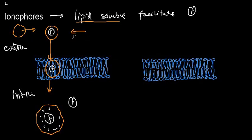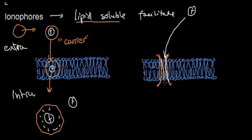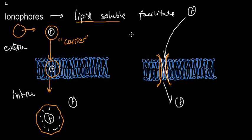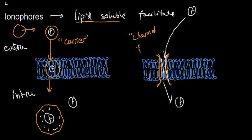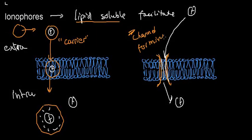The second type of ionophore can form a channel in the membrane with hydrophilic parts inside that allow ions to pass right through. This is called a channel-forming ionophore. So we have two types: the carrier ionophore and the channel-forming ionophore.